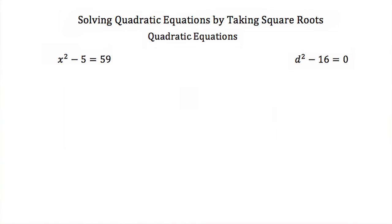Now that we know how to use square roots to solve for our variables, let's talk about using square roots to solve quadratic equations. Here I have x squared minus 5 is equal to 59. The first step is to get the variable on one side and all constant terms on the other side of the equal sign. So I'm going to add 5 to both sides, and I end up with x squared is equal to 64.